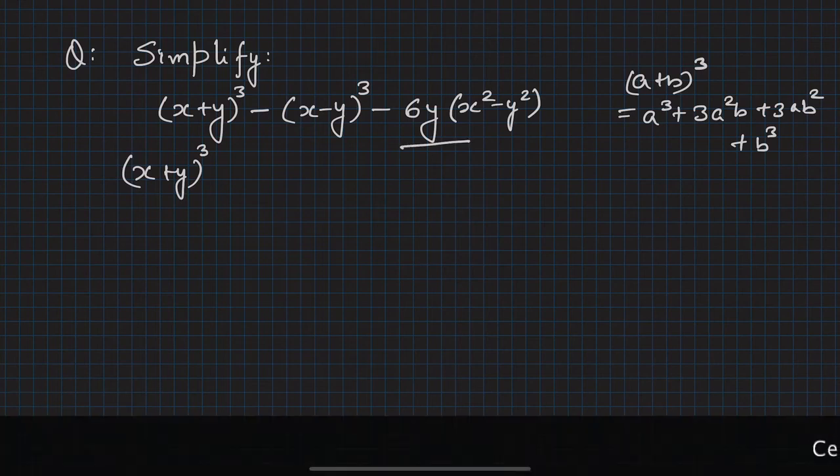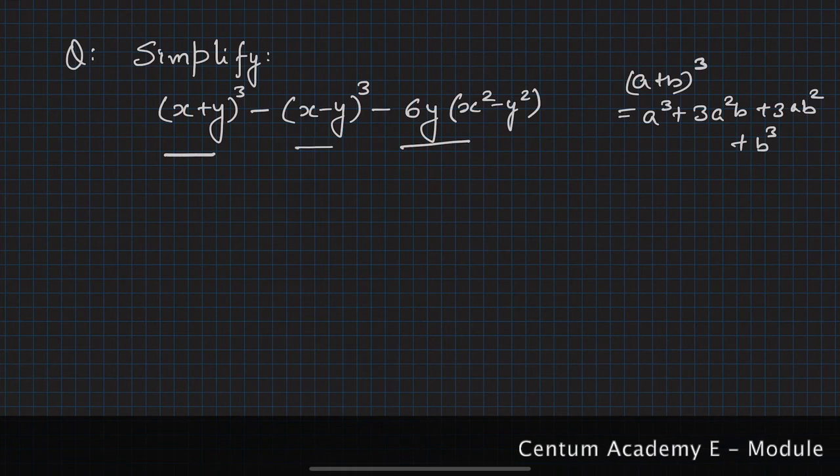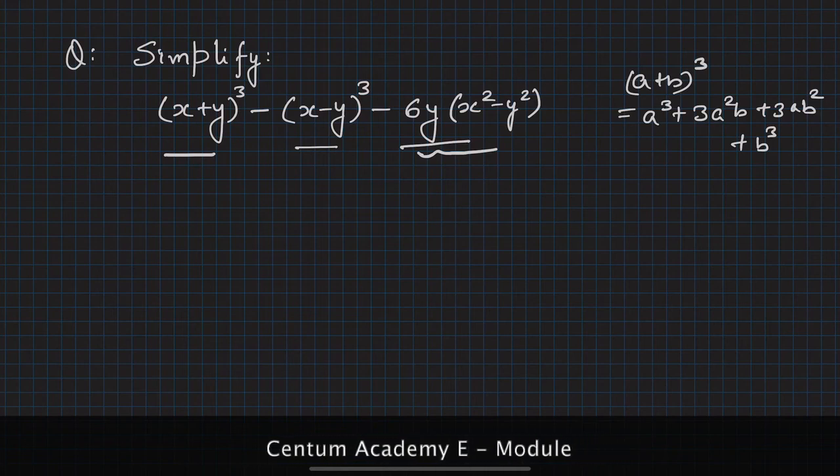What we can see here is there's a cube term and certain terms having multiple x and y together. If I treat this as a³ and this as b³, and somehow get these 3a²b and 3ab² terms from this expression, I can reduce it to cubic form.